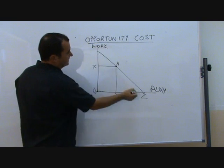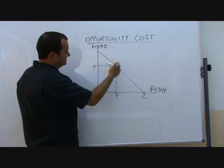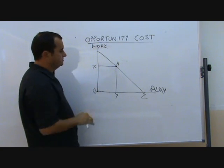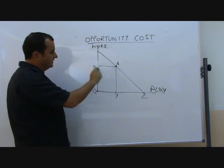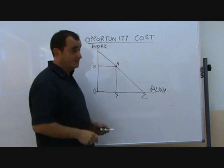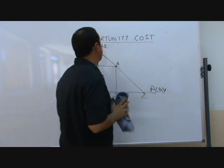One more thing though—this was linear, meaning the rate of substitution between work and play for this student was always the same. In reality, this is unlikely to be linear. It's more likely to be concave.